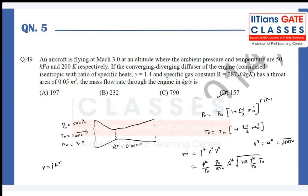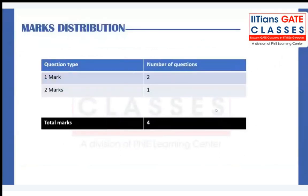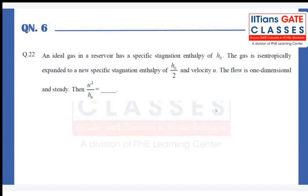Let us move on to 2015 — it was a great paper but had very few gas dynamics questions: two questions totaling about four marks. Let us see the first question. An ideal gas in a reservoir has specific stagnation enthalpy H0. The gas is isentropically expanded to a new specific stagnation enthalpy of H0/2 and velocity U. The flow is one-dimensional and steady. Then U²/H0 is?